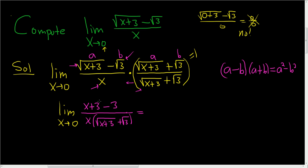And let's see what happens here. The 3's cancel, so we have the limit as x approaches 0 of x divided by x, and then parentheses, square root x plus 3, plus the square root of 3. Now the x's cancel.